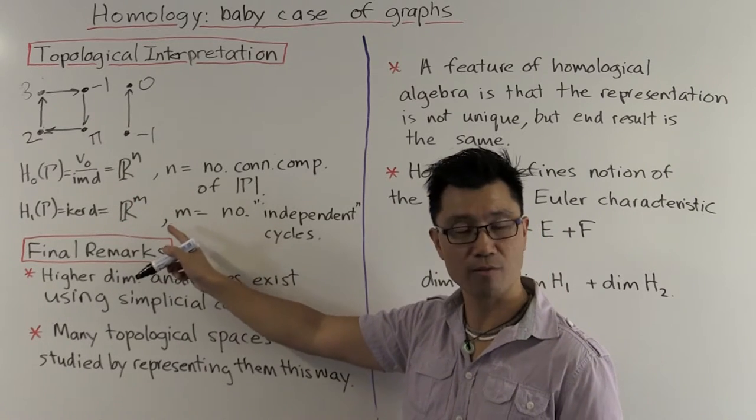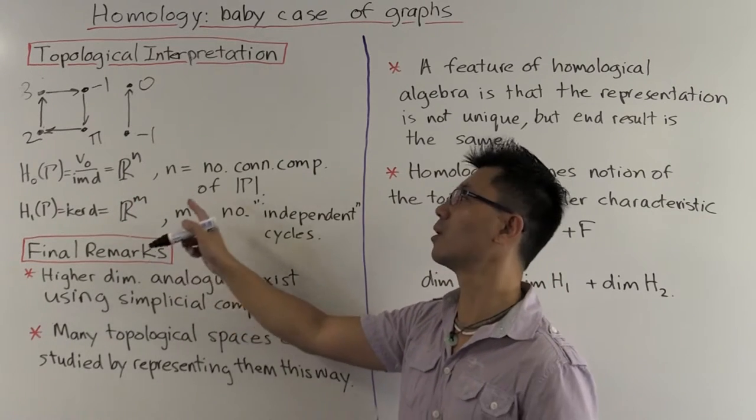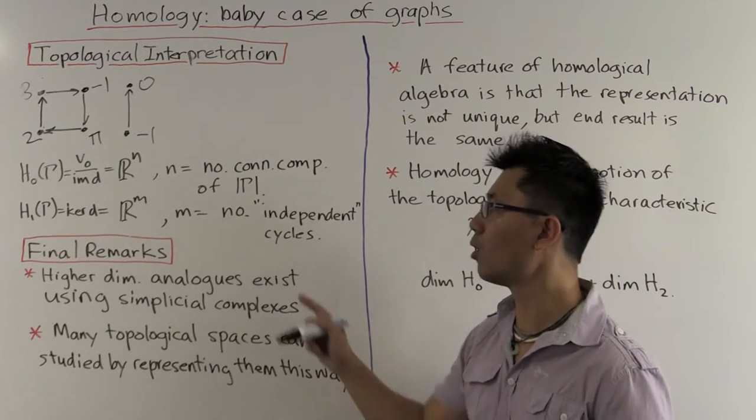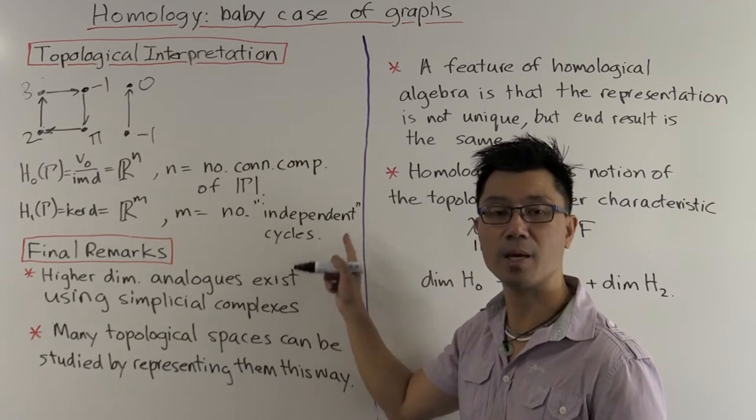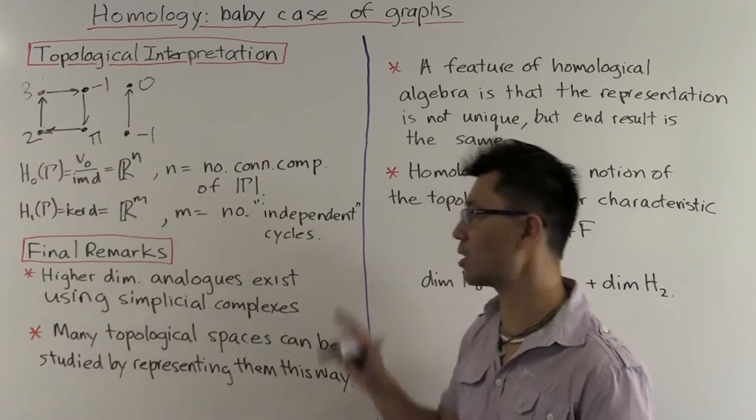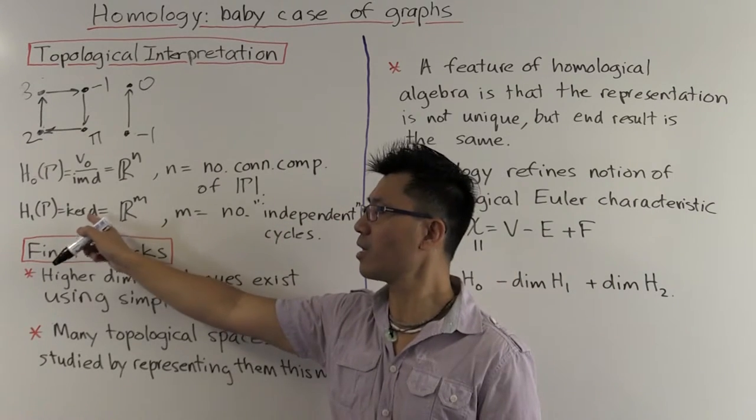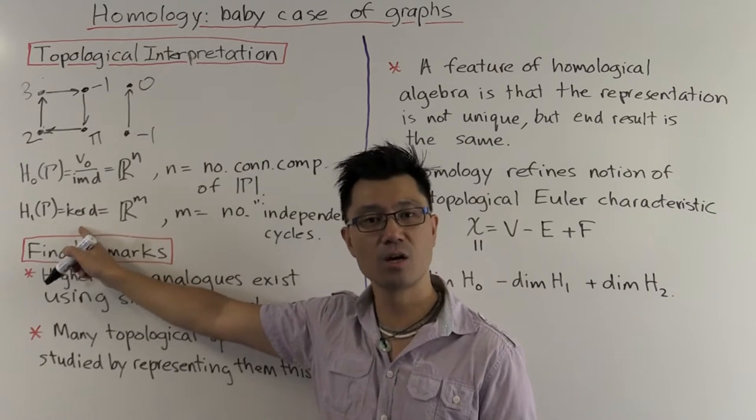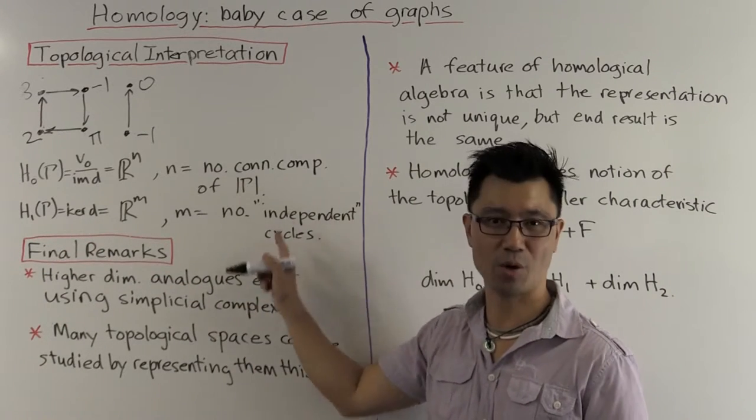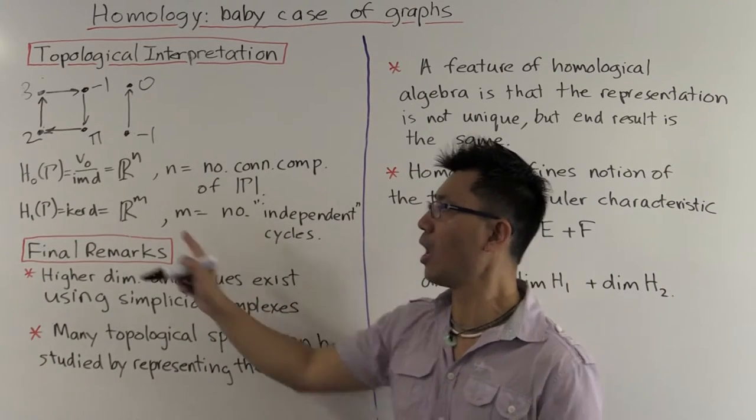H1 of gamma is R to the m where m is the number of independent cycles. Okay, so maybe you don't understand what that means. I think if I give you an example of something that's in here, you'll see why this is true and what this means.